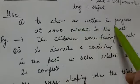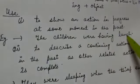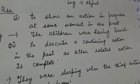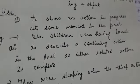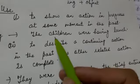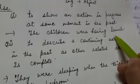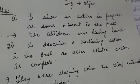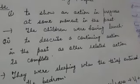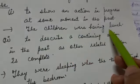Let's discuss its use firstly. To show an action in progress at some moment in the past — past mein jo bhi action progress mein raha hoga, usko show karne ke liye hum iska use karte hain. For example, 'The children were having lunch.' Jo bachche the, woh khaana kha rahe the — lunch kar rahe the.